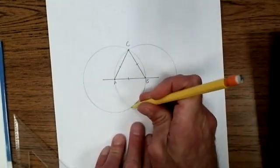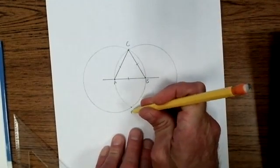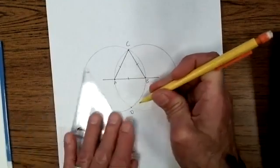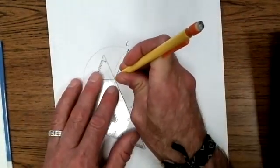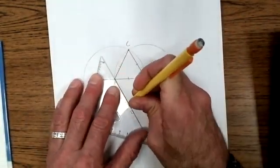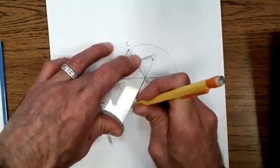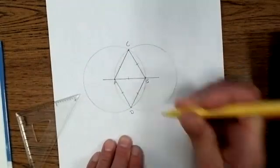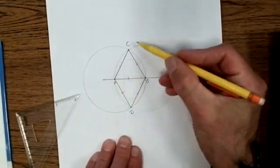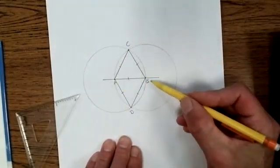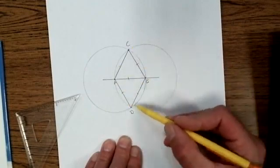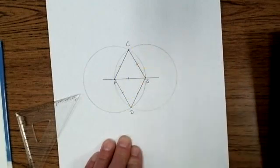Now, if we consider the bottom point over here, let's call that point D. And we connect A to D and B to D. And we have two more congruent radii. And the figure ACBD is now a rhombus because it has four congruent sides.